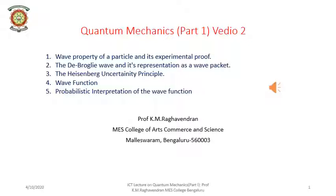Welcome to the second video of this first part of the course in quantum mechanics. In this video, we will look at the wave property of a particle and its experimental proof, the de Broglie wave and its representation as a wave packet, the Heisenberg uncertainty principle, the concept of wave function, and the probabilistic interpretation of the wave function.